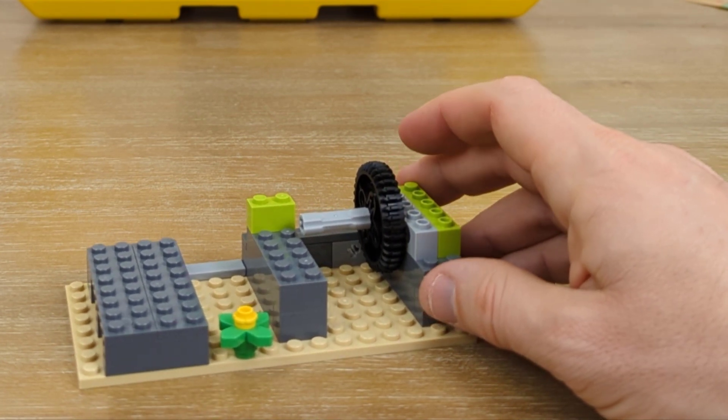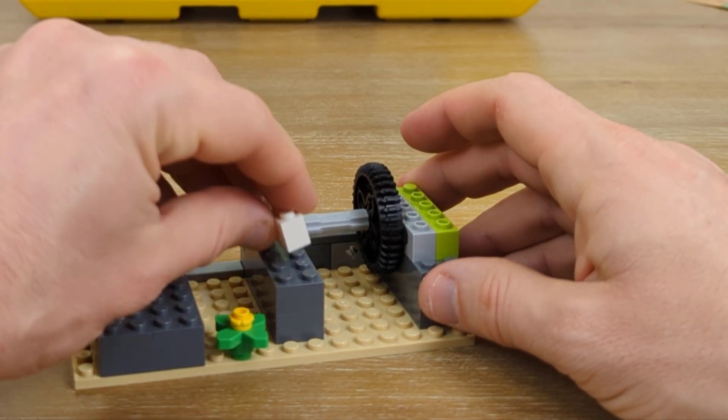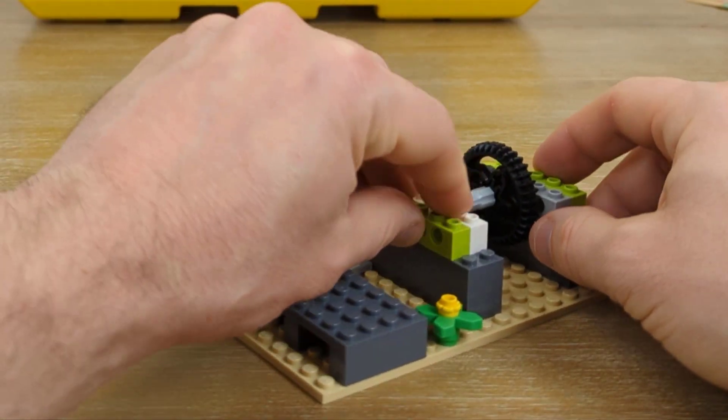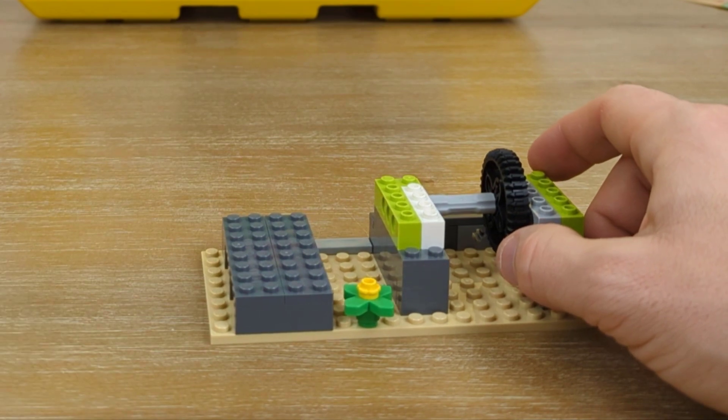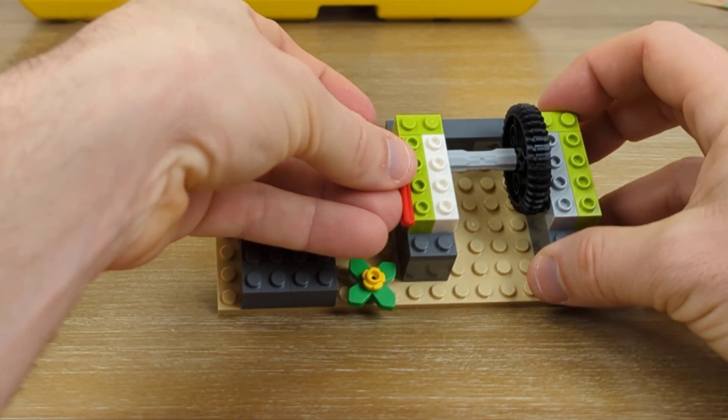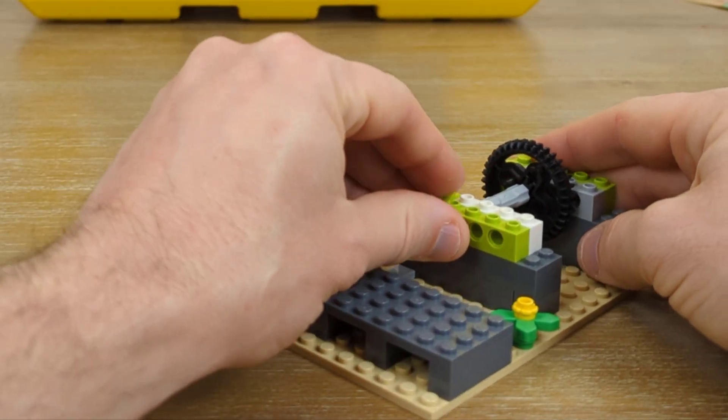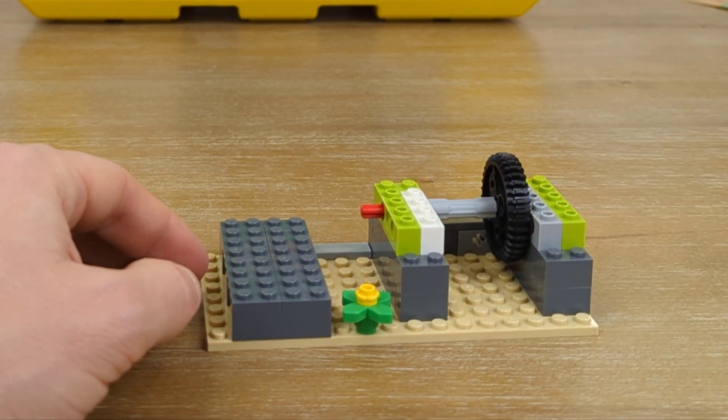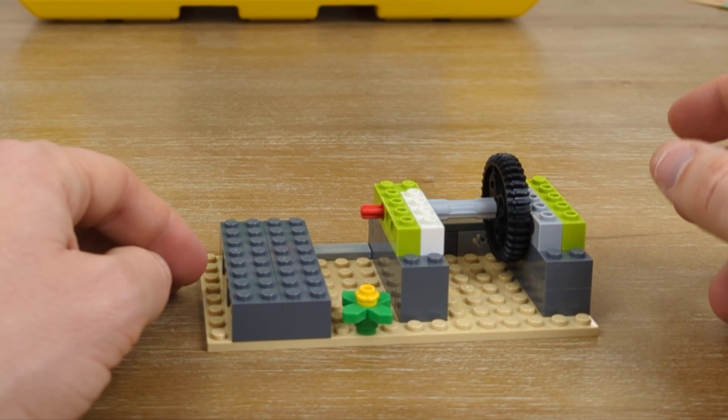And we put an axle extender on that because we are going to attach it to the other side with another one of our Technic beams that have the holes right down the middle, which allows the axle to go right through it. And I put the beams in first and then take a very short three long red beam to put it through, give it a quick spin test. That works perfect.